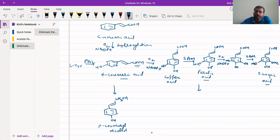Similarly, ferulic acid also undergoes reduction to give coniferyl alcohol. Similarly, synapic acid will also undergo reduction to form synapyl alcohol.